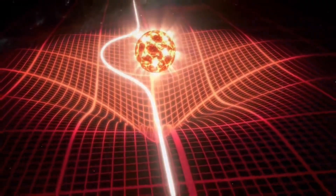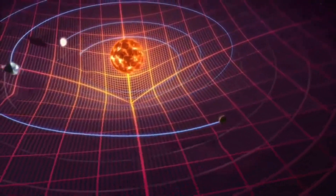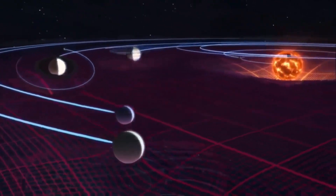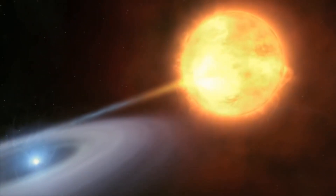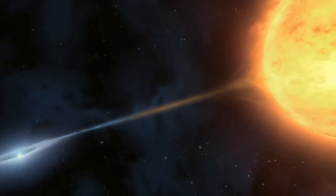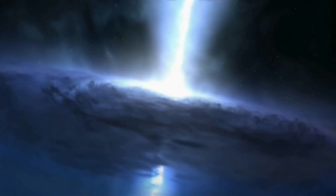We can understand the curvature of space-time with a simple example. Imagine a rubber sheet that we consider to be space-time. A big ball placed on the sheet — which we call the sun — curves it. A small marble representing the Earth, when placed on the sheet, moves circularly and slowly approaches the big ball, moving in a particular orbit. From this we can understand how Earth moves around the sun due to the space-time curvature and gravity. Where space-time curvature is high, gravity is greater — like a black hole, which has so much mass and space-time curvature that not even light can escape.